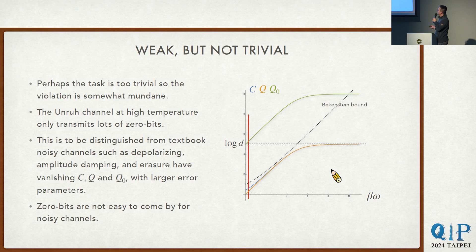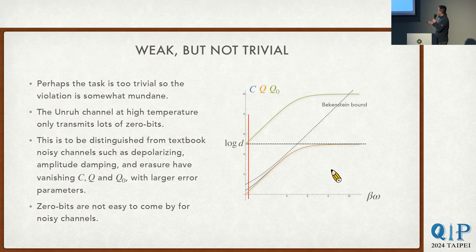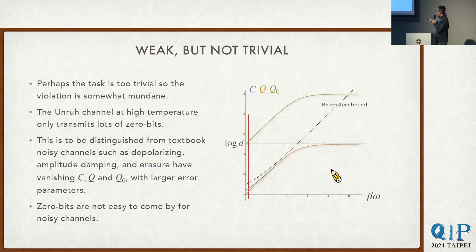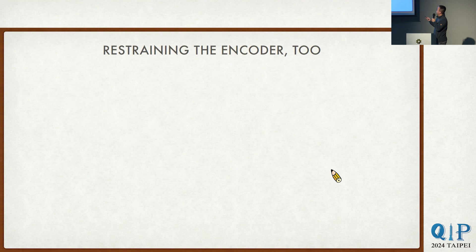One might think this task is just too weak, so it's no surprise we found a violation. But this is actually a bit subtle. If you look at our channel at very high temperature, there's no quantum or classical capacity, but there's an extensively large zero-bit capacity. This is to be distinguished from textbook noisy channels: for those channels, if you make the error parameter very noisy, all capacities including the zero-bit capacity vanish. Our Unruh channel is something special—when you make it very noisy, it still has the ability to transmit a large amount of zero bits. They're not easy to come by. So: weak, but not trivial.